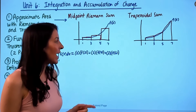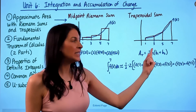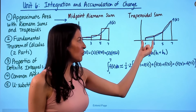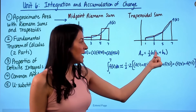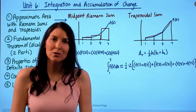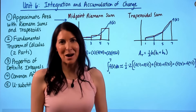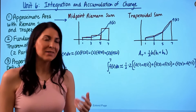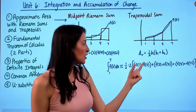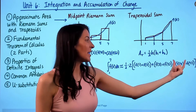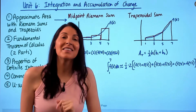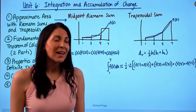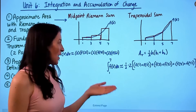For a trapezoidal sum, recall from geometry that the area of one trapezoid is one-half times the height of the trapezoid times the sum of the two bases. On our graph, one-half times h (the height) is this horizontal length, and base one plus base two are the heights of the two sides of the trapezoid. Since all three trapezoids share a one-half and a height of two, factor out one-half times two. This simplifies to: f(1) + 2·f(3) + 2·f(5) + f(7).